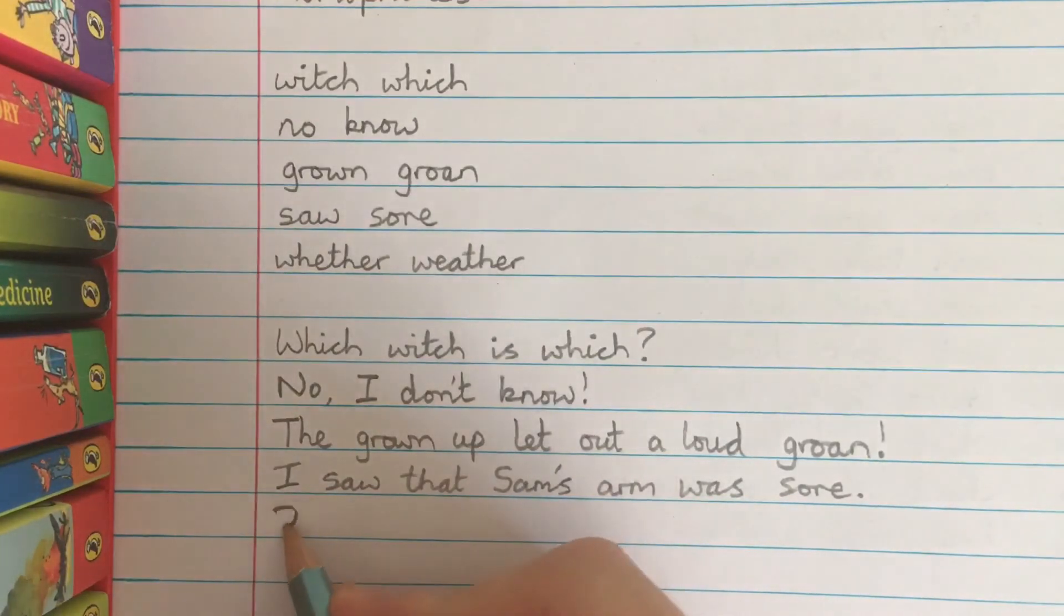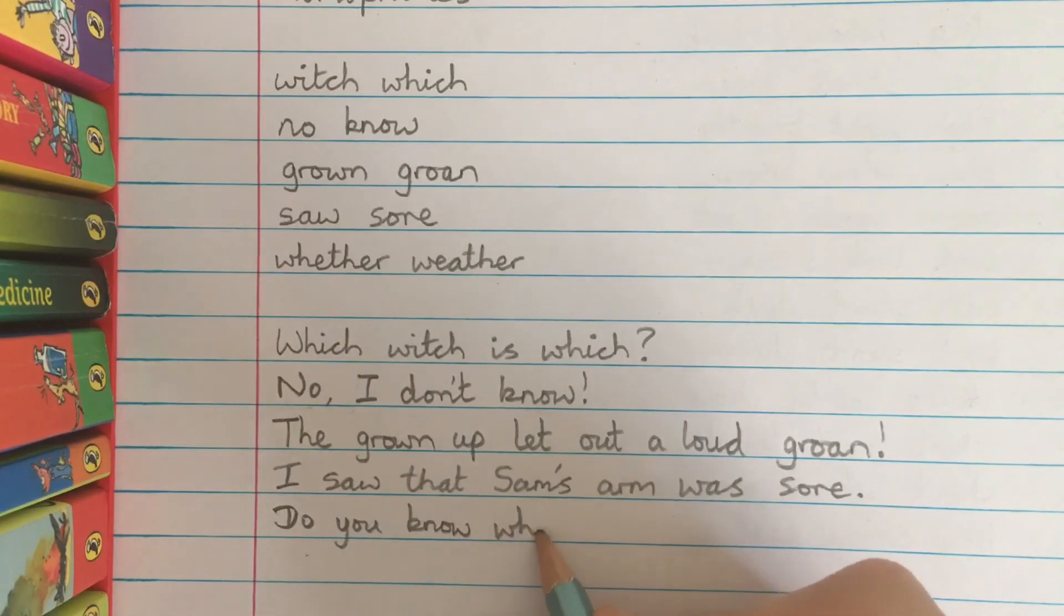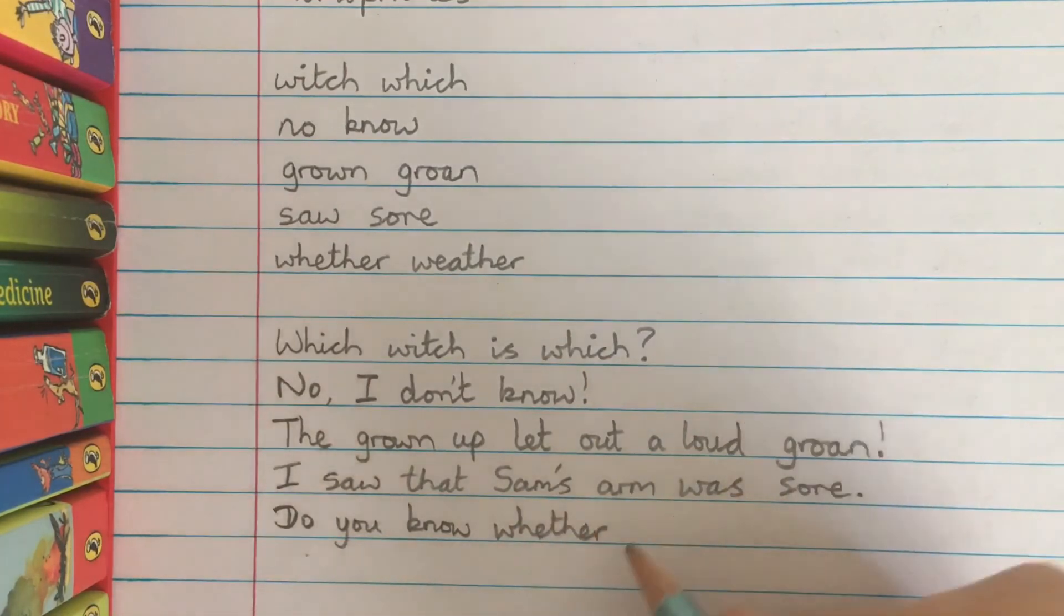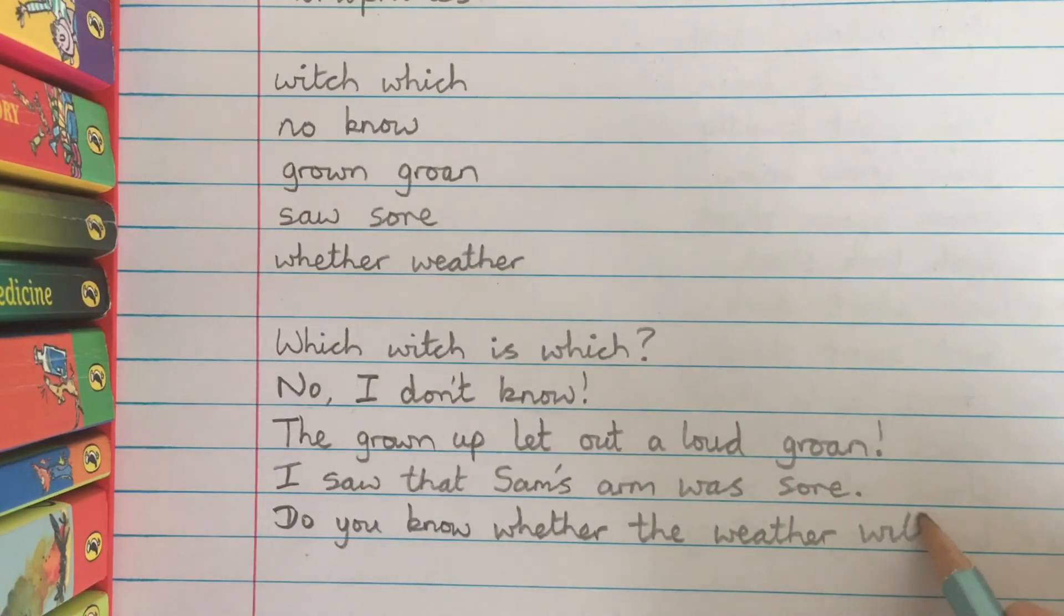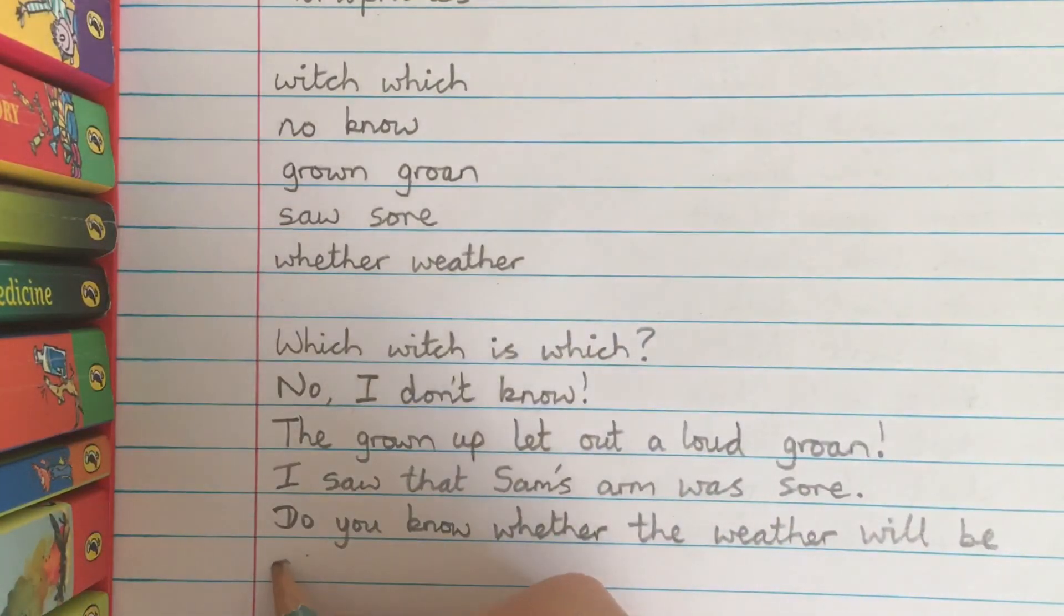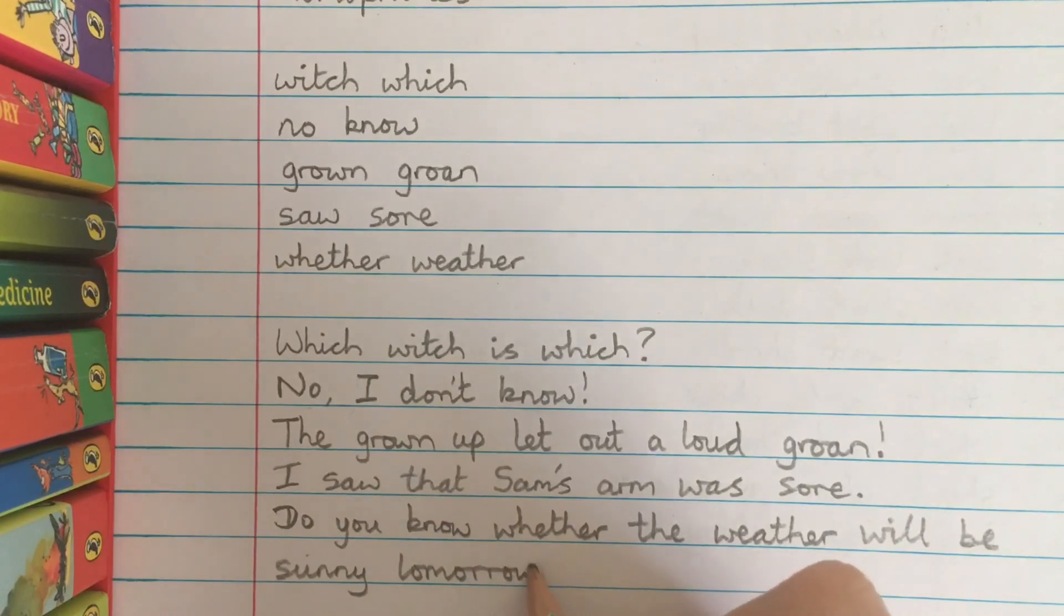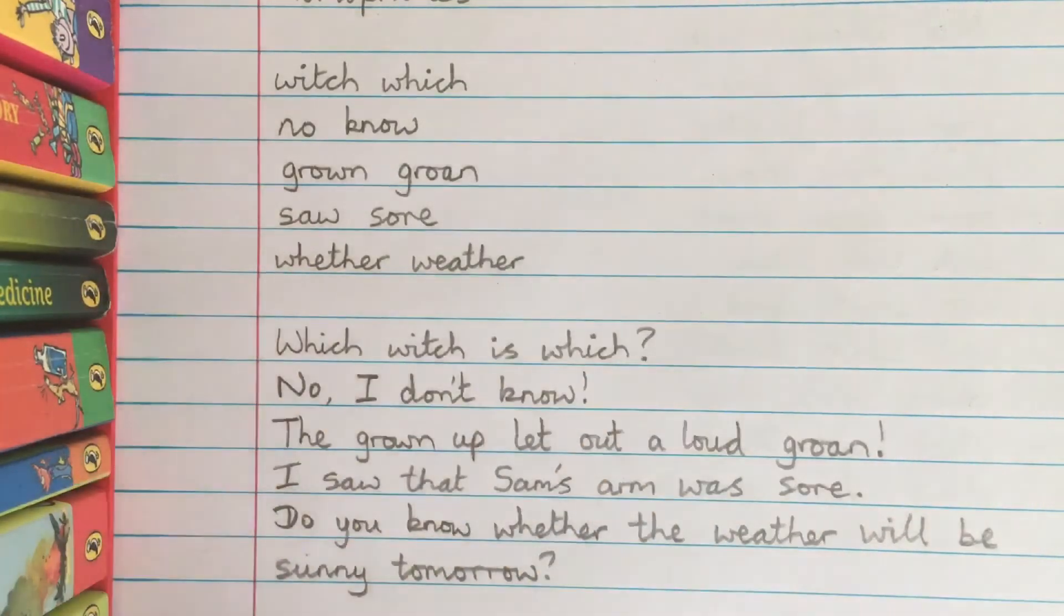Do you know whether the weather will be sunny tomorrow? Now in this sentence, this whether is the choice between one thing and another and this one is to do with what the weather in the sky will be like.